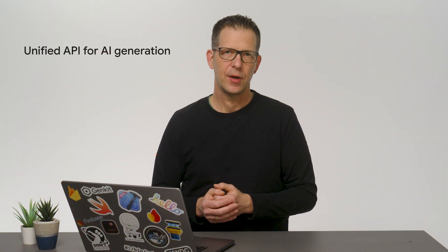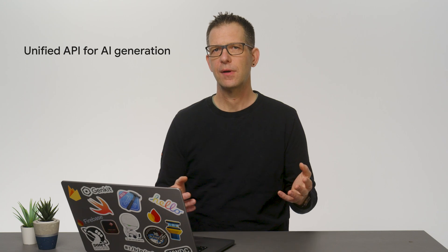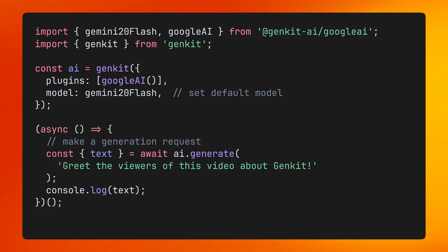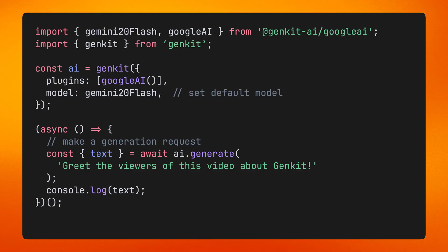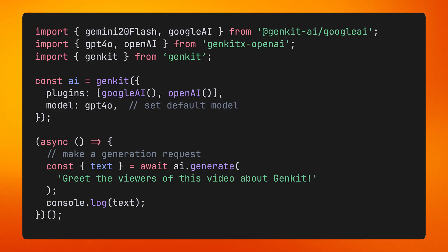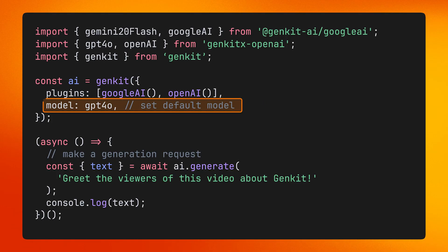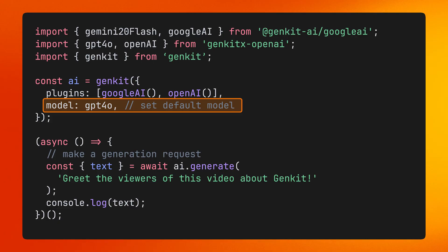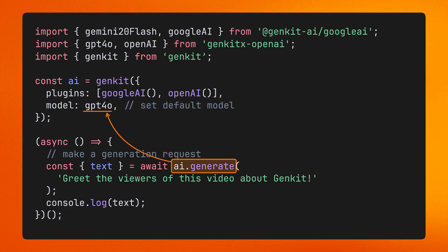Thanks to GENKIT's unified generation API, you can use different models without having to learn their individual APIs. All you have to do is install the respective model plugin from NPM, import it into your code, add it to the list of GENKIT plugins, and configure it. Then you can set the default model when creating your GENKIT instance, and whenever you use GENKIT's generate method, it will use this default model to perform your request.